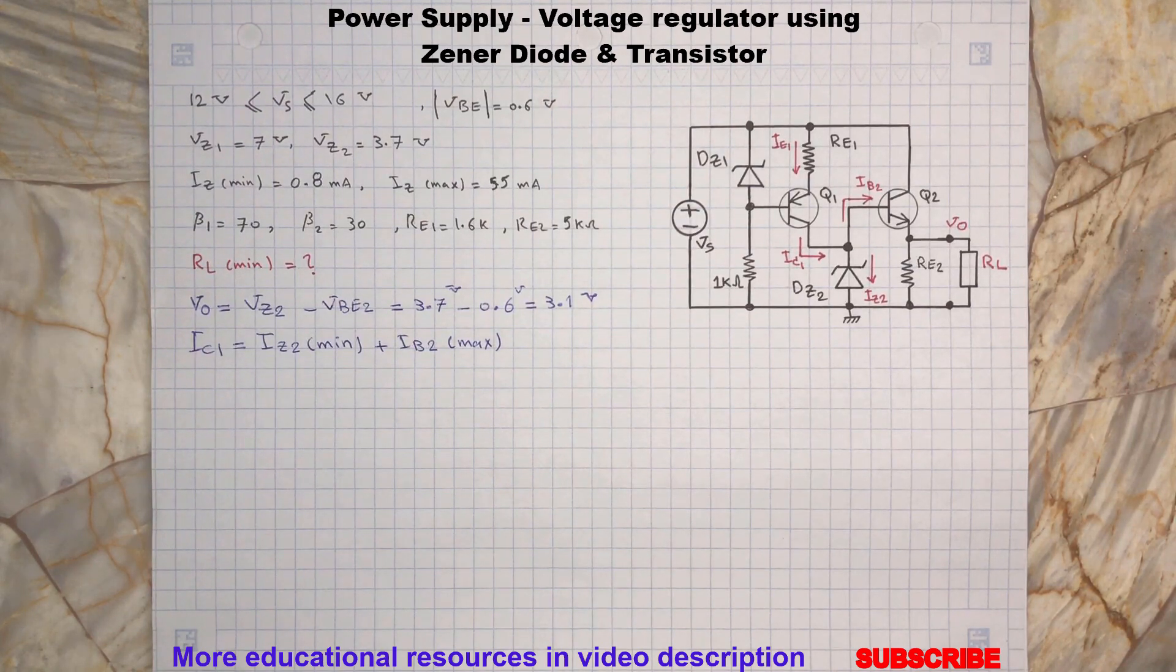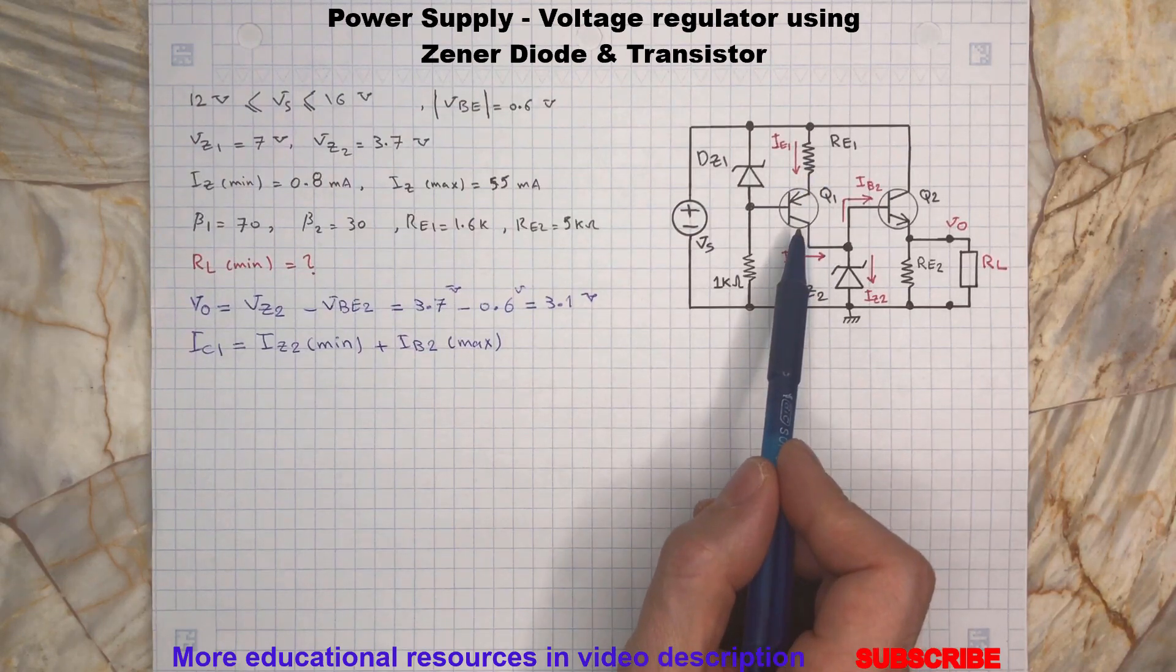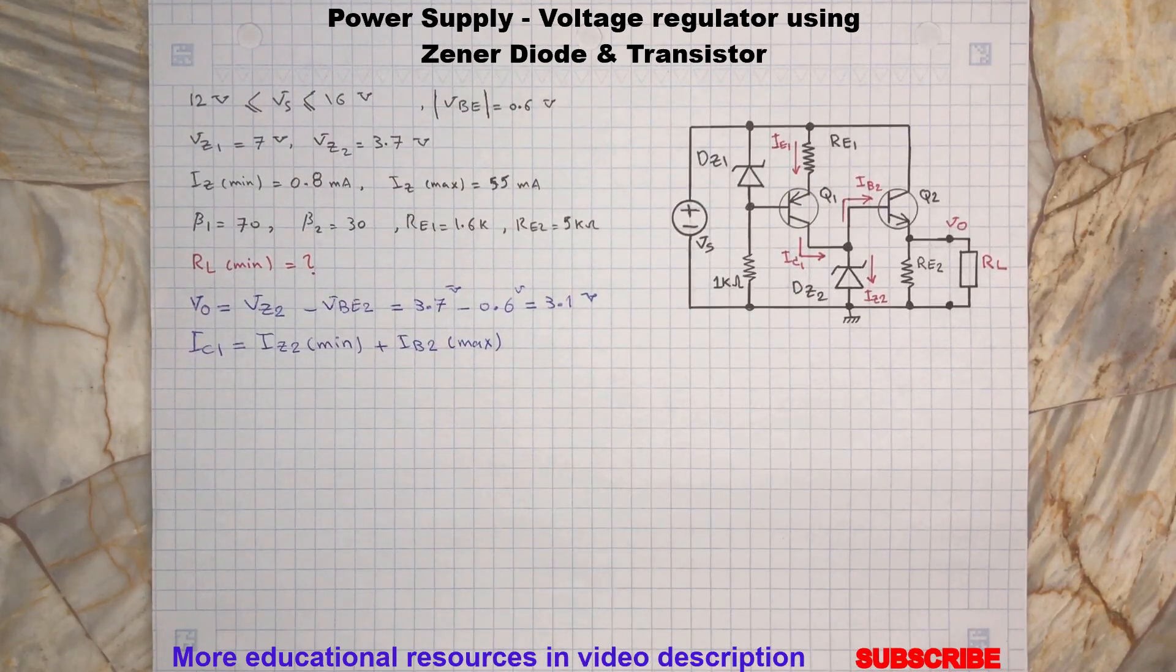First we will determine the IC1 by calculating the current flowing through the emitter of transistor Q1. Q1 is a PNP BJT transistor, here is how we can find this current: we assume the Zener diode 1 is on therefore its anode and cathode terminals will have a constant voltage as 7 volts and then we write a KVL as following.